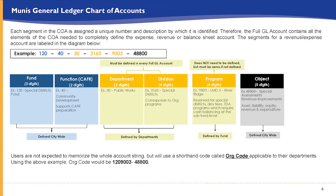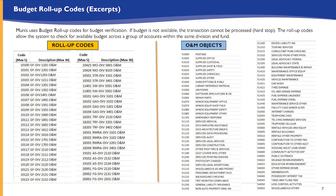The last thing I want to highlight is a benefit in the new Munis system around how budget verification is performed. When processing a transaction, HTE currently checks whether there's available budget for that expense. Warnings in HTE are set up as soft warnings, so people can override them and we have to deal with it after the fact. In Munis, you will not be able to override a budget warning — if there is not sufficient budget, the transaction cannot be processed. You'll need to get your budget adjustments approved before proceeding with transactions.